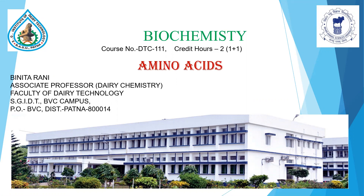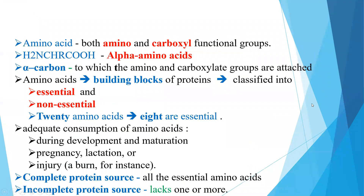We are going to discuss amino acids. An amino acid is the building block of protein, which is the most required macromolecule for growth, development, and maintenance of our body. Amino acids contain both amino as well as carboxyl functional groups. The structure of alpha amino acids is NH2-CHR-COOH, where both the amino group (NH2) and the carboxyl group (COOH) are present.